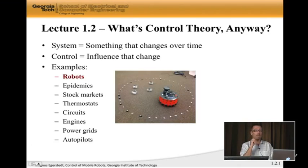Some examples, and we're going to see all of these examples in the class, of systems that one can control would be robots, epidemics where you can come up with vaccination strategies, stock markets, thermostats for keeping the temperature pleasant indoors, electrical circuits, DC engines, power grids, or autopilots on aircraft.